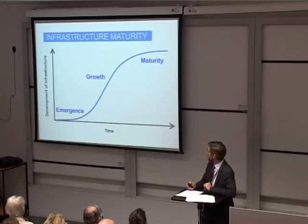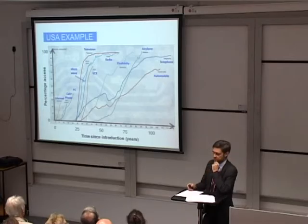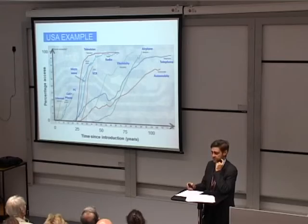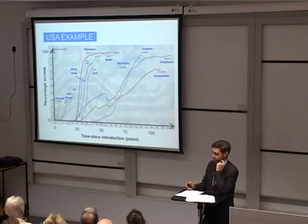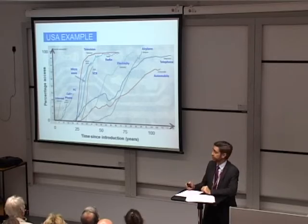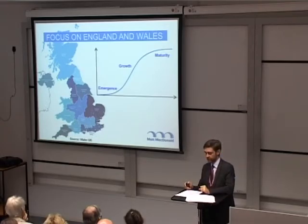Just to show that this curve is a real thing — here are some S-curves from America, most relating to telecommunications and some to transportation. What's quite interesting is that more modern infrastructure goes up the S-curve a lot quicker, which is another sign that the world is speeding up. But it illustrates that this S-curve of infrastructure development is a real thing.